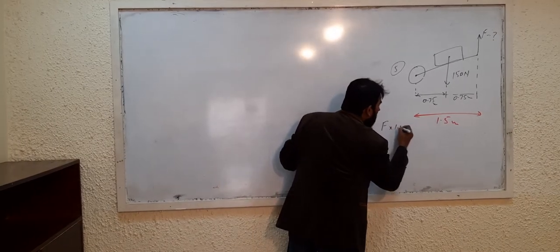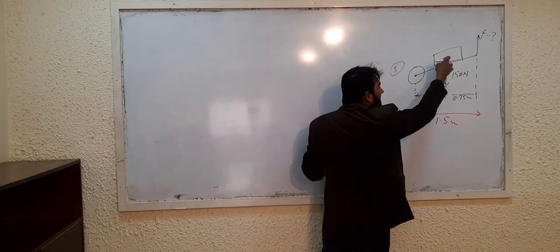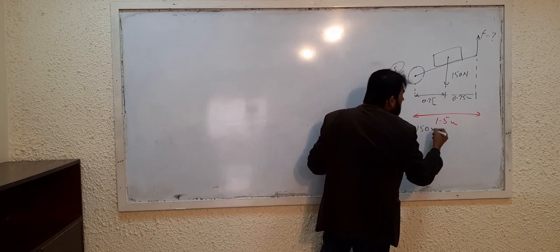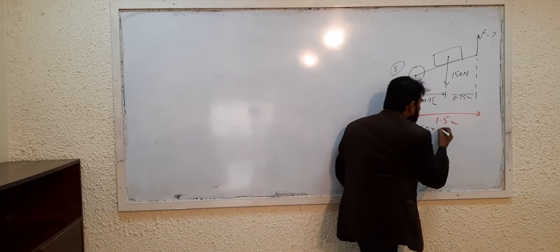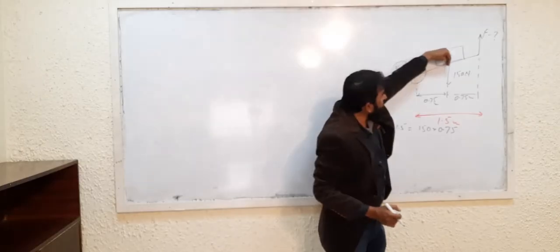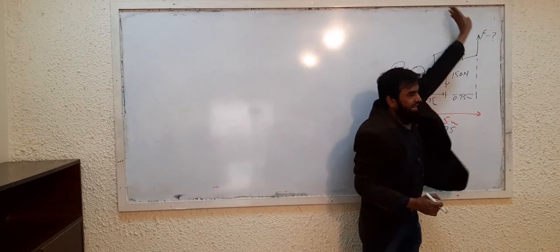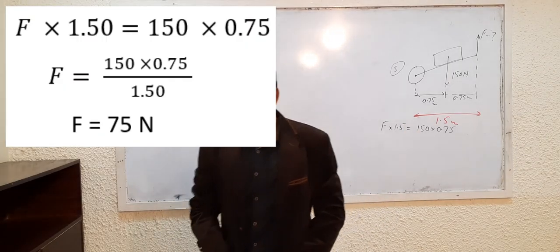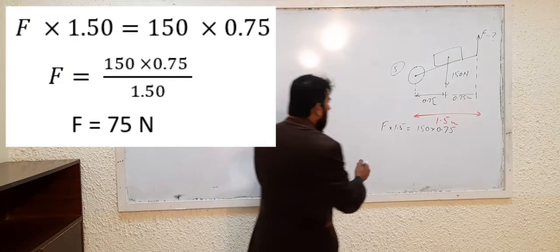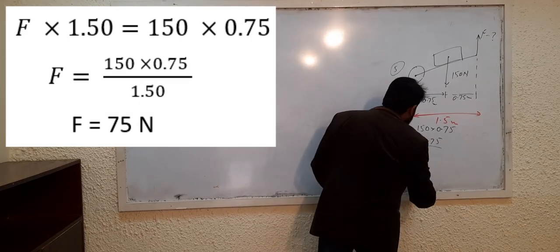...the distance of this weight. How much is the distance of the weight from the pivot? This distance is 0.75. This is clockwise moment from your side and this is anti-clockwise. For a body to be balanced, the anti-clockwise and clockwise moment must be equal to each other. So solve this: F × 1.50 = 150 × 0.75. F = 75 Newton.